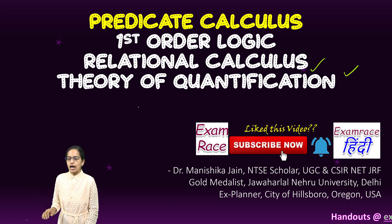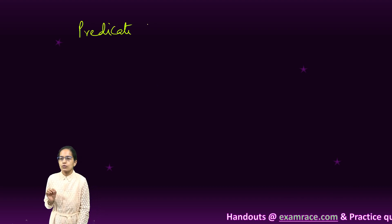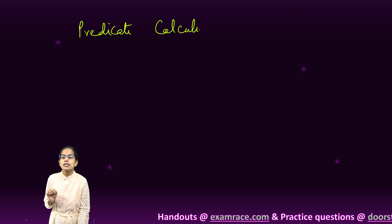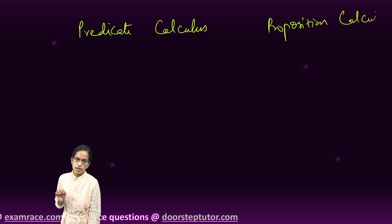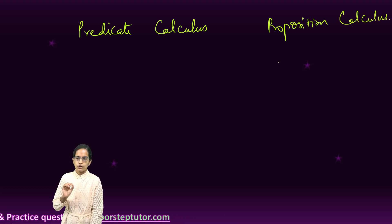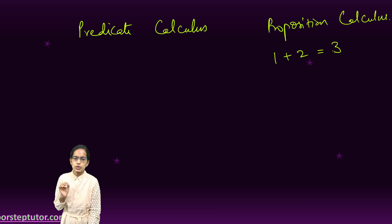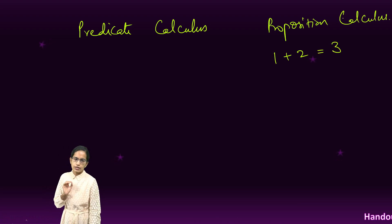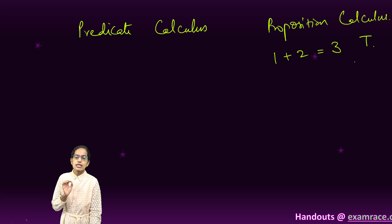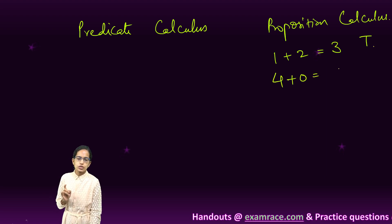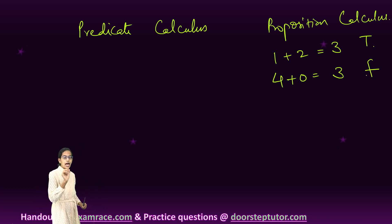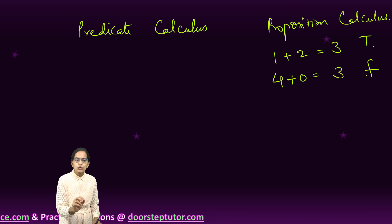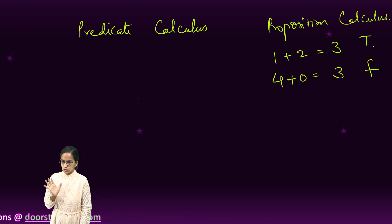To understand the difference between predicate calculus and propositional calculus: propositional calculus is very simple — it has a truth value. For example, 1 plus 2 equals 3 is true, and 4 plus 0 equals 3 is false. In propositional calculus, a statement has either a true or false value associated with it.